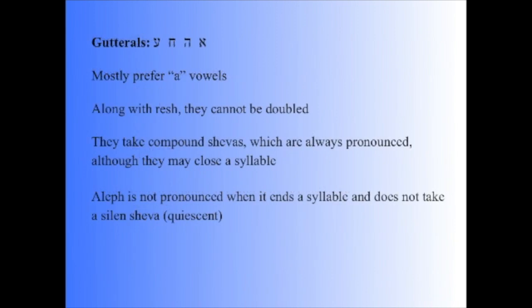The gutturals, remember, don't behave like other consonants. They mostly prefer A vowels. Along with the Resh, they cannot be doubled. We'll be looking at this later as well. Sometimes the Dagesh, which we ran into when we were talking about the Begadkefat letters, can occur in other consonants and in the Begadkefat letters in situations where the consonant is being doubled.